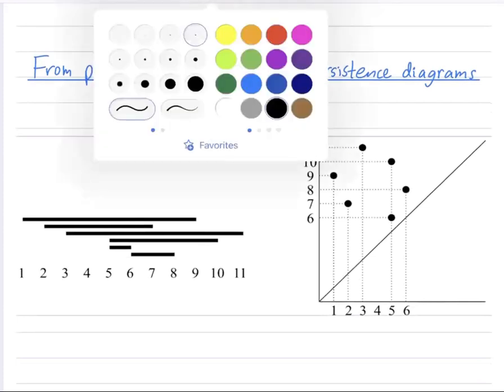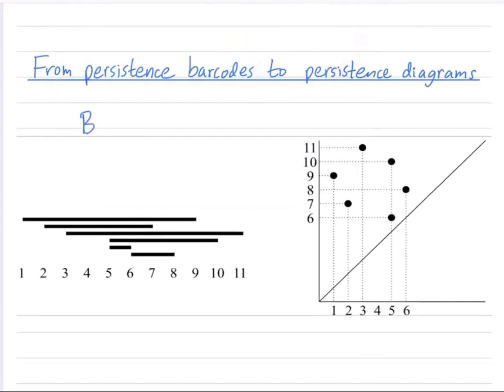On the left, I have drawn a barcode for you. And on the right, I have drawn a diagram. Roughly speaking, these both represent holes in a growing space. So we might be tracking one dimensional holes or loops.